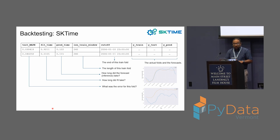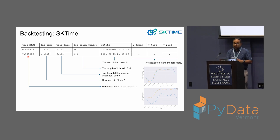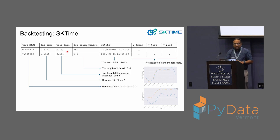SK Time returns a lot of information after backtesting concludes — for every fold it provides the training data, testing data, and predictions made by the model, enabling inspection plots. For each fold we also get a customizable performance metric, the time taken to fit the model, and the time taken to make predictions, giving benchmarking estimates to report back to the product manager on computational costs. This was SK Time.